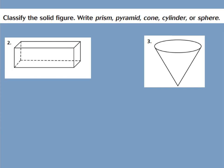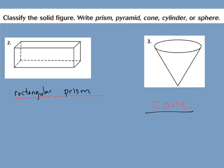Let's look at questions two and three in our GoMath book. For question two, classify the solid figure — write if it's a prism, pyramid, cone, cylinder, or sphere. If you want to get fancy, you can give the first name and last name. For number two, you should have called it a prism — or if you really wanted to get fancy, a rectangular prism. For number three, you should have called it a cone.